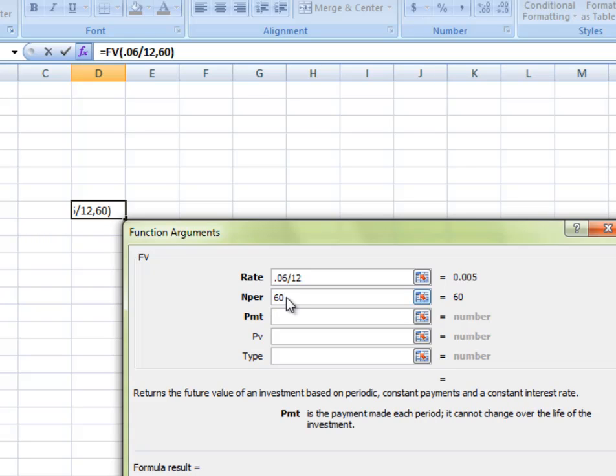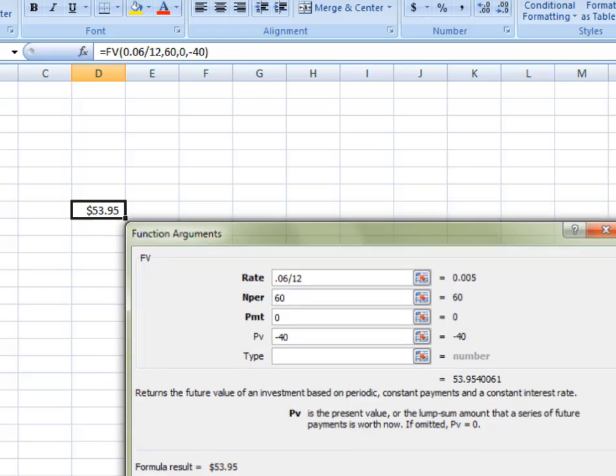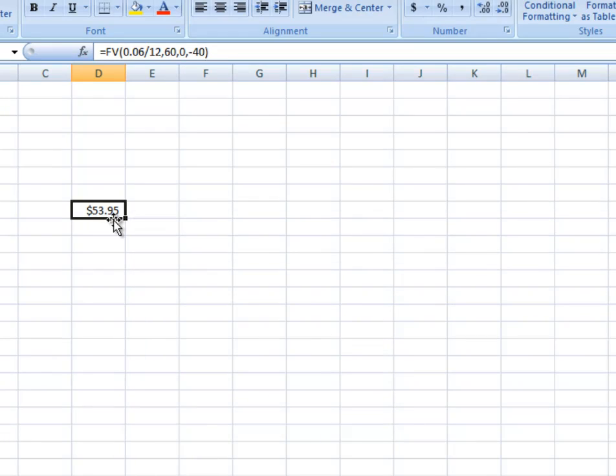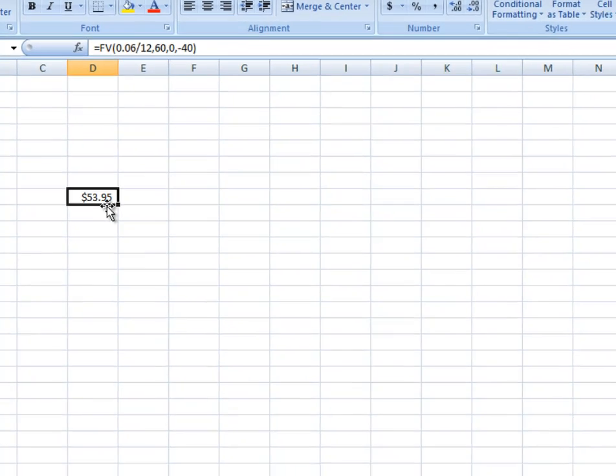The payment, now again, we didn't do any payments, so this one's 0. Now PV stands for principal value, or our capital P in there. We invested $40. Don't forget, that's a negative $40. And look at what it comes up with. Ka-ching! $53.95. We can just stick it in there like that without any problem, and it already does all those calculations.